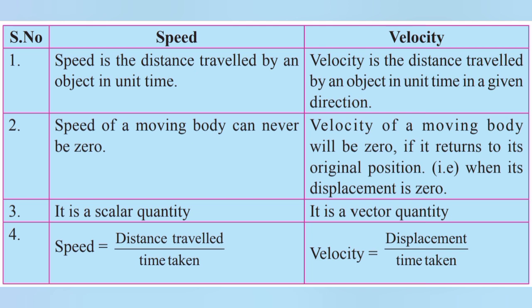3rd point: speed is a scalar quantity; velocity is a vector quantity. 4th point: speed equals distance travelled divided by time taken; velocity equals displacement divided by time taken.